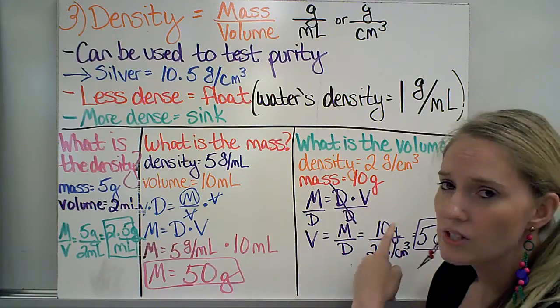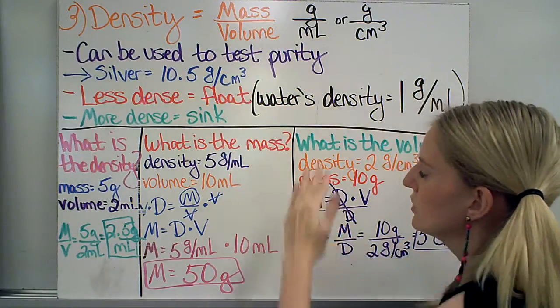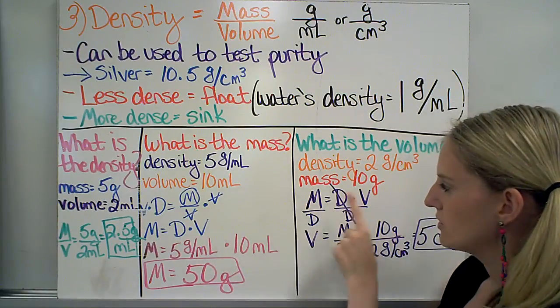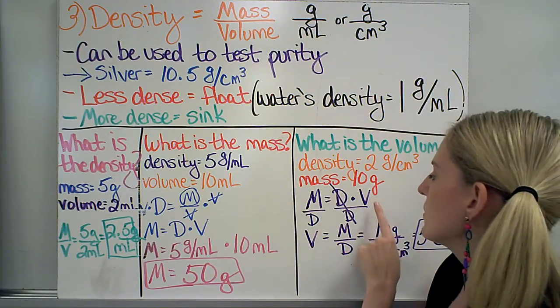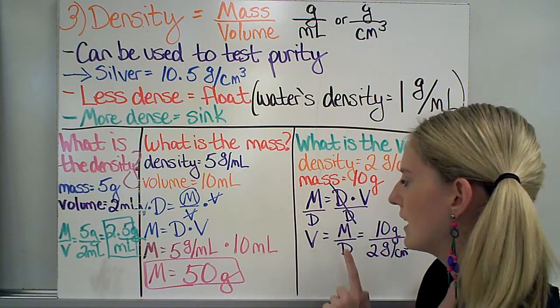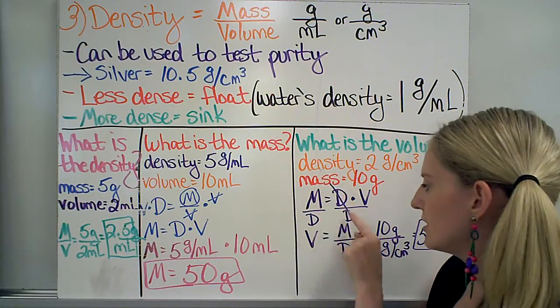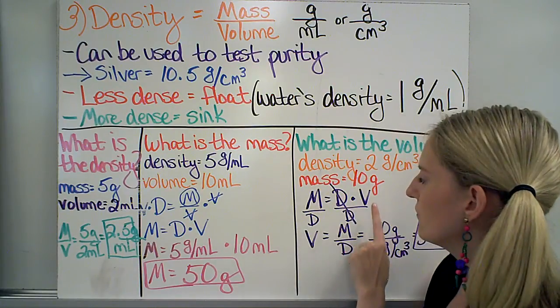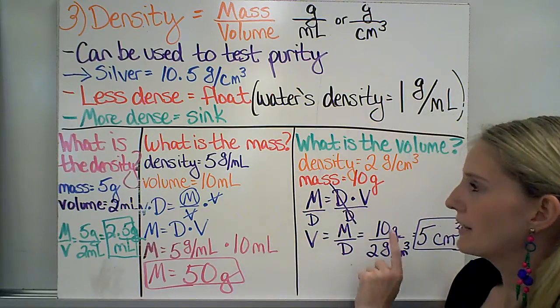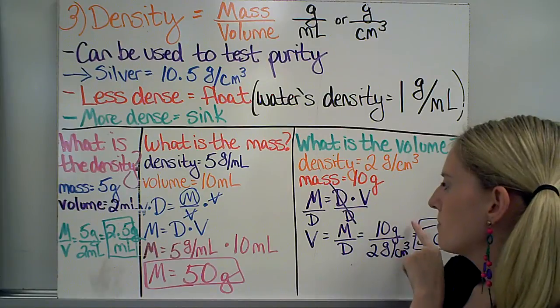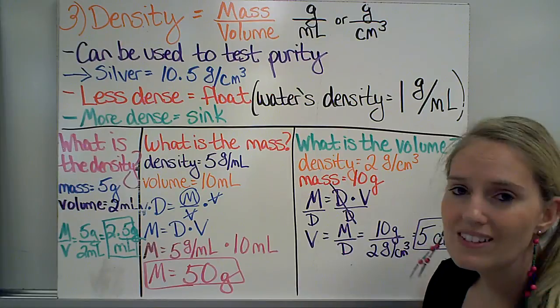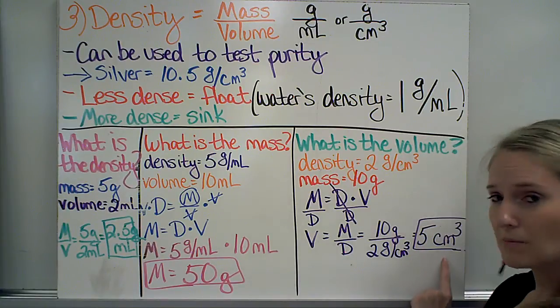The same is true for volume, so I need to rearrange this. What I've done here is I rewrote the equation that I came up with here, right here. So M equals D times V. I know I want to get volume by itself, so I need to divide by D on both sides, so I can get these D's to cancel or equal one. So I have volume equals mass divided by density. Now I can just plug in the numbers that they gave me. I put the mass on top, which is 10, divided by the density, which is 2. So I get 5 centimeters cubed as my answer for the volume.